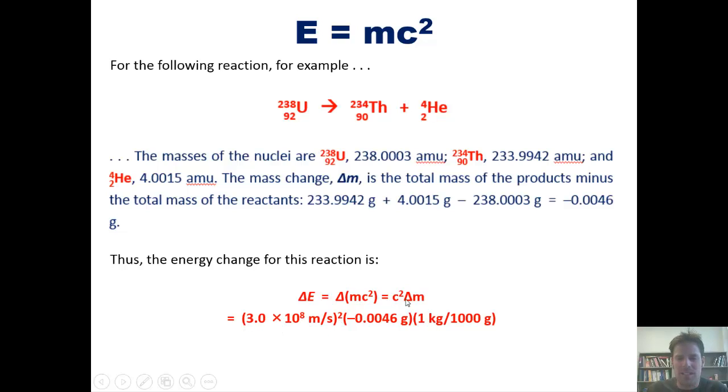If we throw in our numbers then, we're going to see that C, the speed of light, 3 times 10 to the 8th meters per second, is going to be squared here. We throw in for our delta M this negative 0.0046 grams, and then we convert it to kilograms as the SI unit. It ends up coming to this answer, which has a negative sign indicating that it's exothermic. Negative 4.1 times 10 to the 11th kilogram meter squared per second squared.